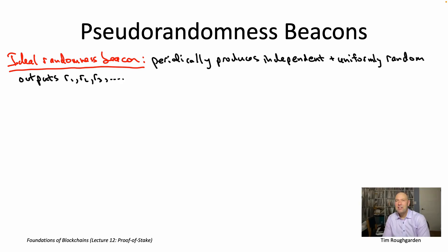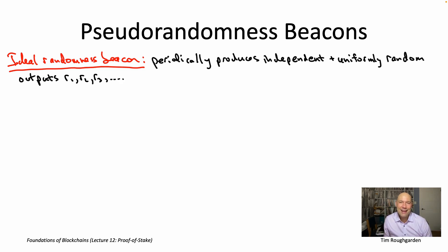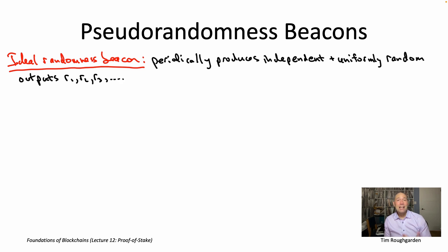In addition to making use of some cryptography, the VRF-based solution outlined over the last two videos was also using the ideal randomness beacon. The output R_t of the beacon is what everybody was evaluating their VRF on, to check whether or not they won the lottery. So those are some pretty nice ideas, but we still have this lingering issue: where does this perfect randomness from the sky come from? Presumably that doesn't exist.